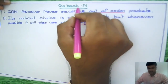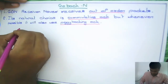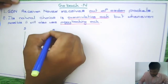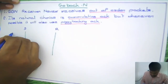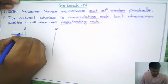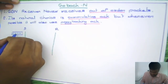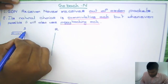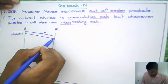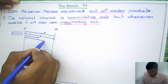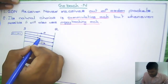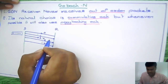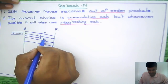Now let us understand the name Go-Back-N. Assume this is the sender and receiver. The sender wants to send 8 packets — this is the sliding window. The sender sends packets with sequence numbers assigned to each packet.